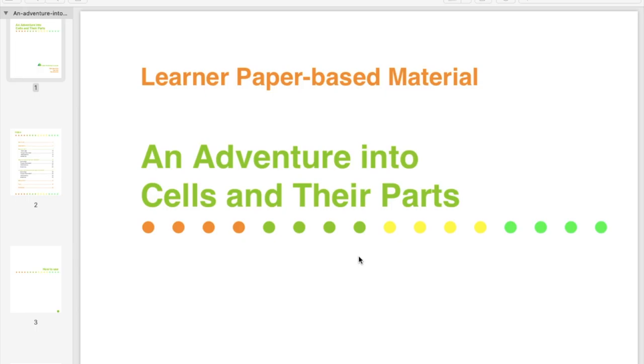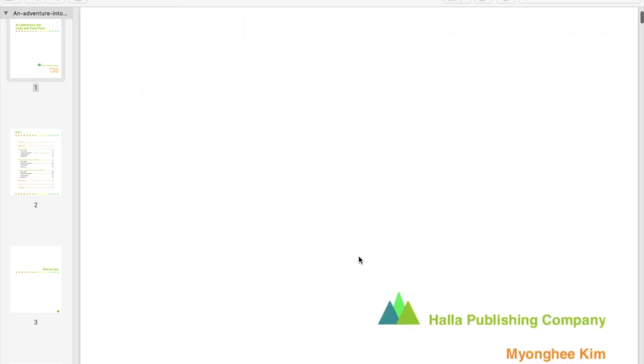I'll say that again. Identify the different functions of cell parts. Make sure you write that down. That is part of your grade today. So your instructions say use the comic strip on pages 16 to 21 to complete the following table about cell parts. So you need to go to page 16 of this comic book.